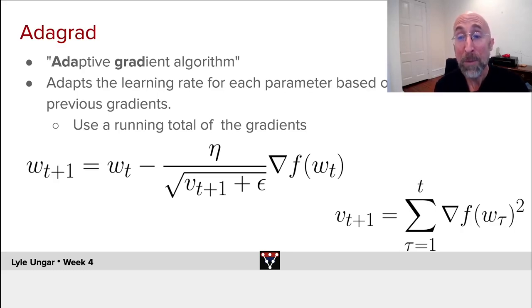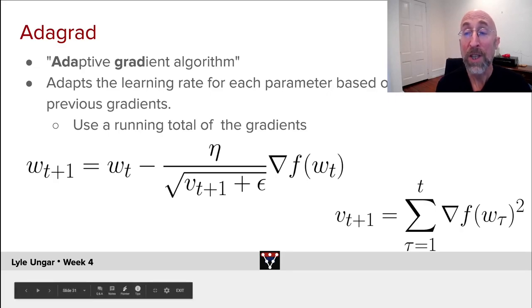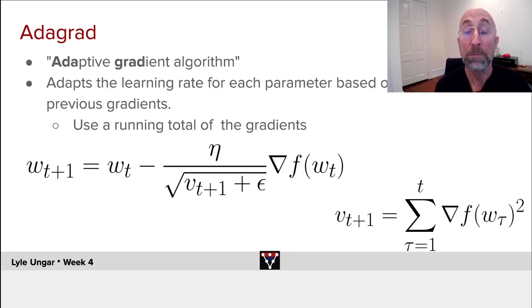And the scaling, it's just the sum of the squares of all the gradients of that particular weight so far. So it's the square root of the sum of the squares, the L2 norm. How big were the previous gradients?